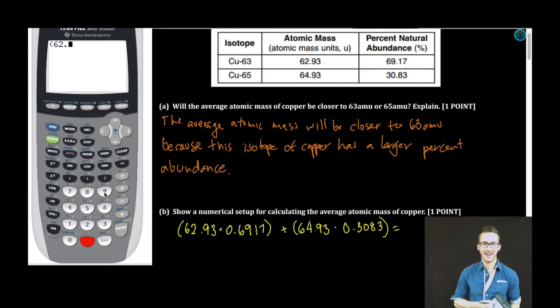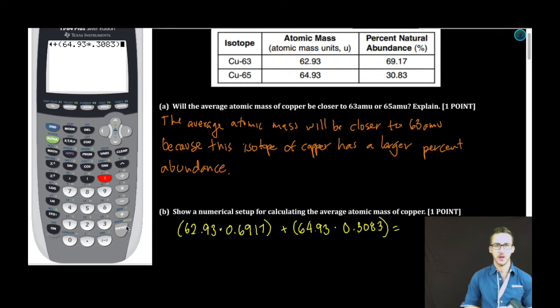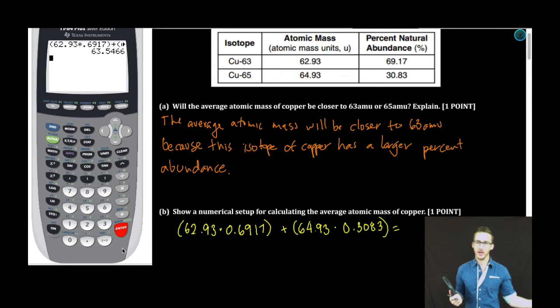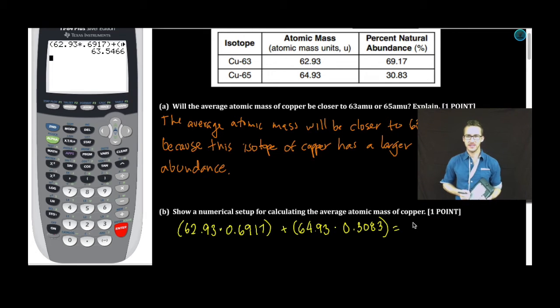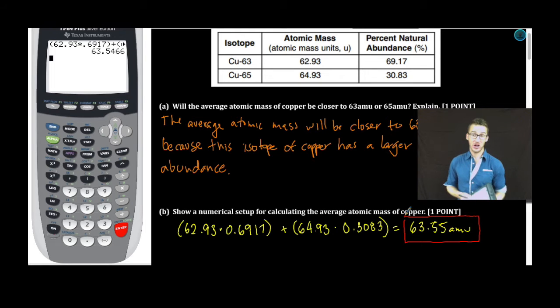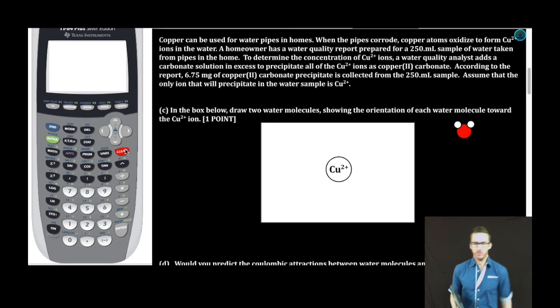Calculator time: 62.93 times 0.6917, plus 64.93 times 0.3083. What do you know? 63.5466. And if we're using sig figs, 63.55 amu. Notice that our answer supports part A. 63.55 is closer to 63 than it is to 65. Use that as a guide to help you determine whether or not you got the correct answer. Let's keep this party rolling.